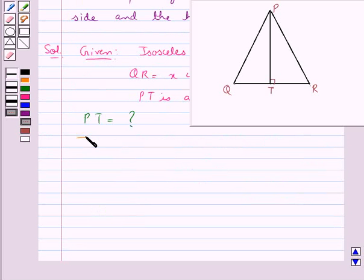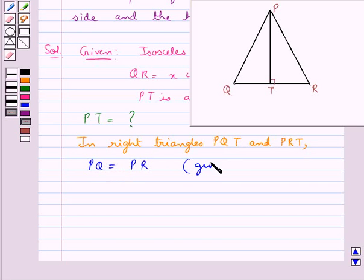Consider the right triangles PQT and PRT. In this we have PQ = PR which is given to us, and PQ and PR are respectively the hypotenuse of triangles PQT and PRT.